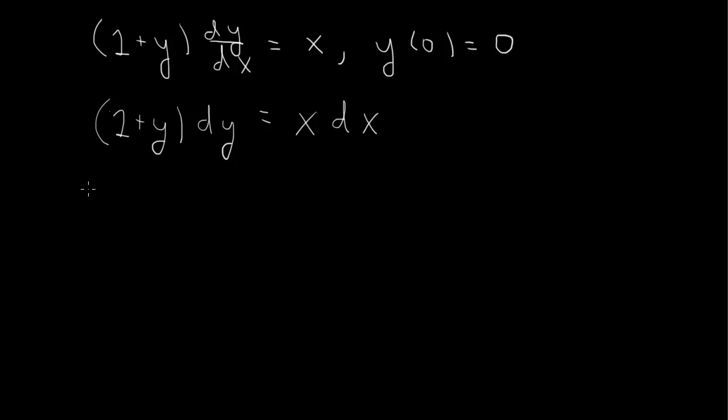Then we can integrate both sides of this equation. We integrate from the starting value of x, which is x = 0, up to x. So x is the independent variable in the upper limit of the integral. For y, at the lower limit where x = 0, we have y(0) = 0, so we integrate from 0 up to y. We're looking for y as a function of x.